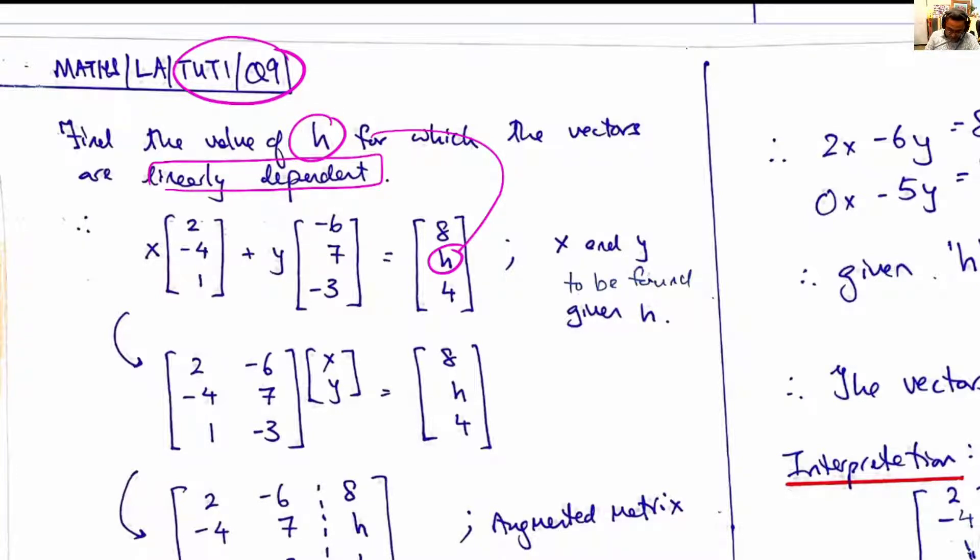We are given two column vectors and two variables x and y. To find that these three vectors are linearly dependent means that this vector can be formed by linear combinations of these two vectors.